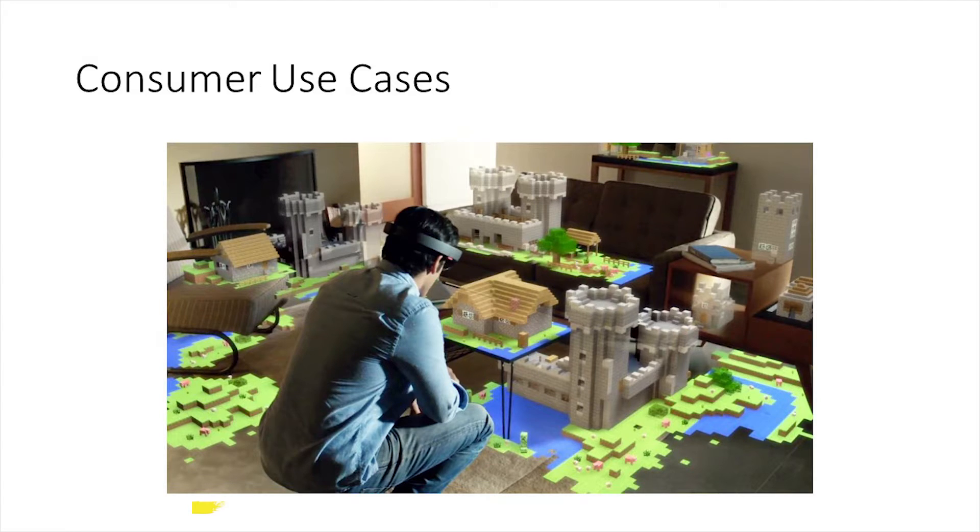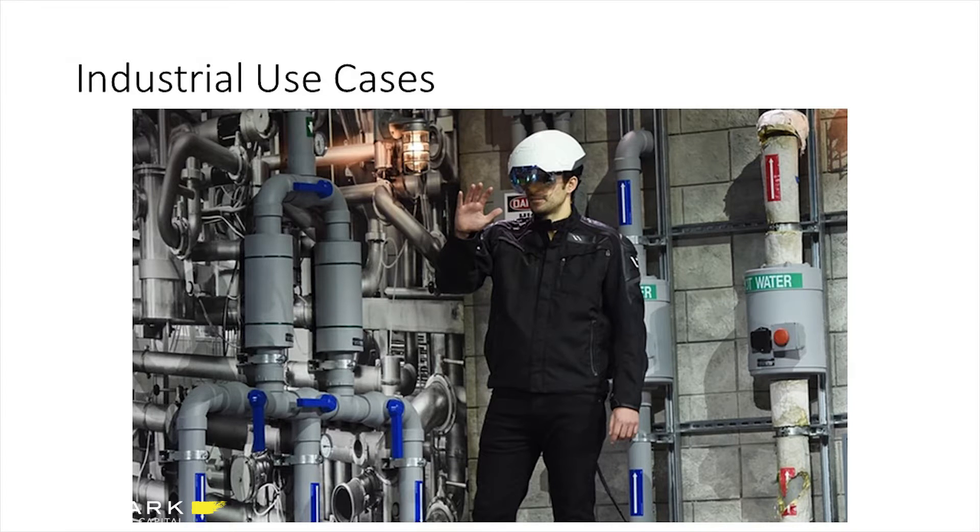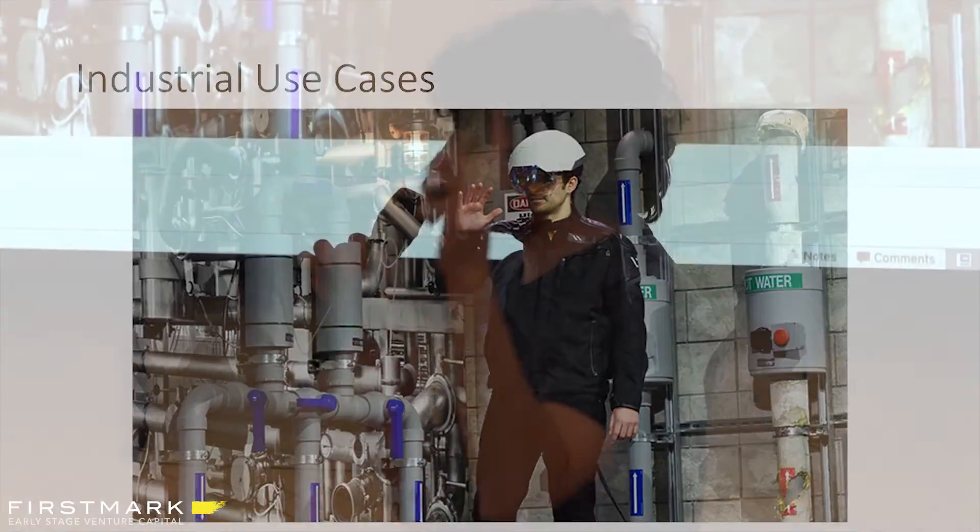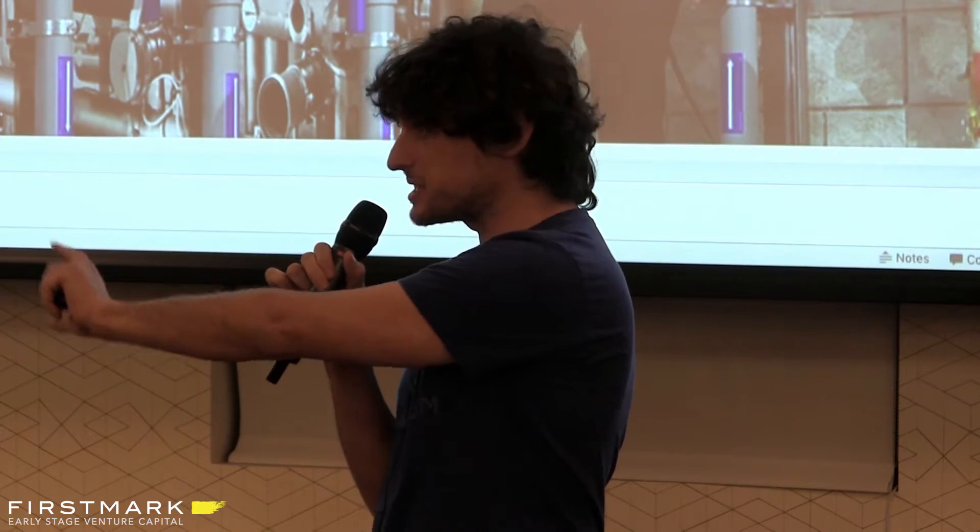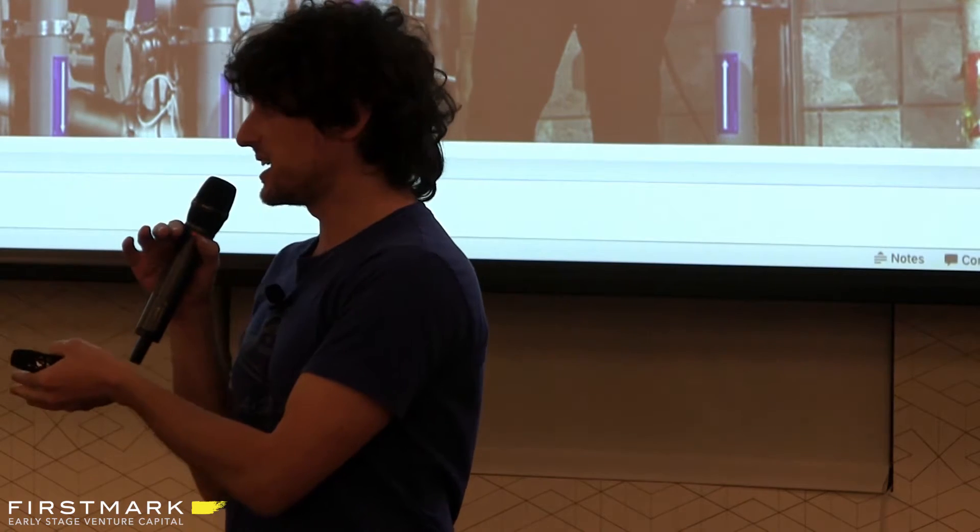At CES, a company called Daqri announced a product in collaboration with Intel that is a construction helmet that also has mixed reality capability that will allow workers in the field, on construction sites, and factories to see an augmented, enhanced version of reality. Perhaps they can see through a wall with a heat camera, or they can receive instructions in the field as they go along. This is a very revolutionary concept that has never before been possible. This is the ability to have the full power of the digital world completely living in the physical space we're working and playing in.